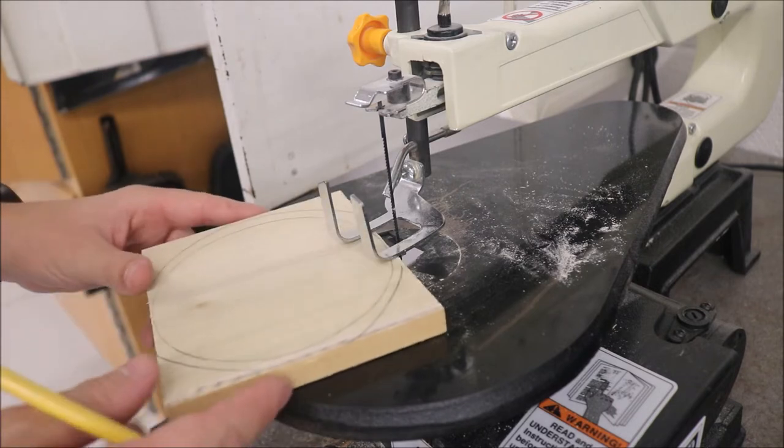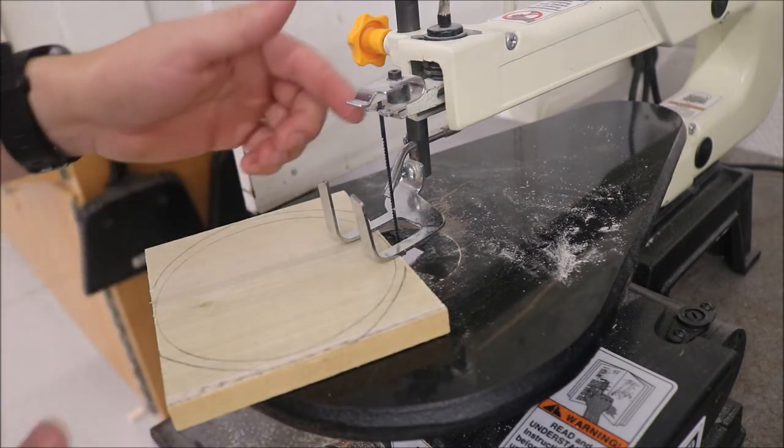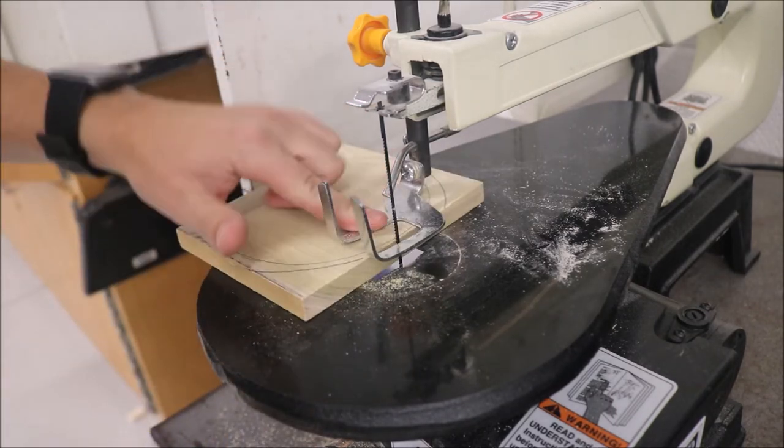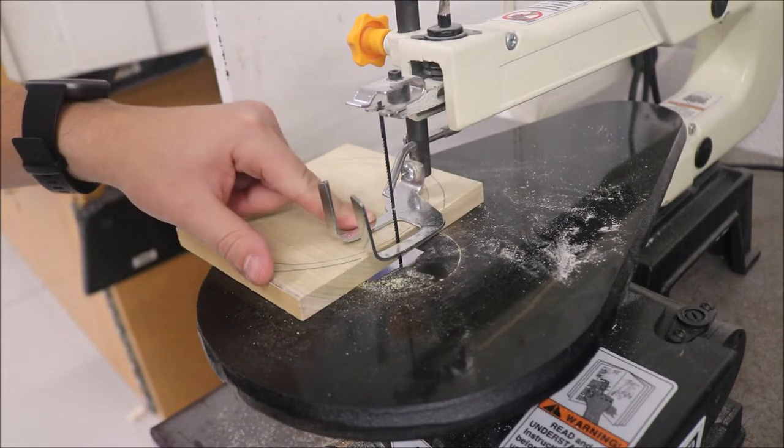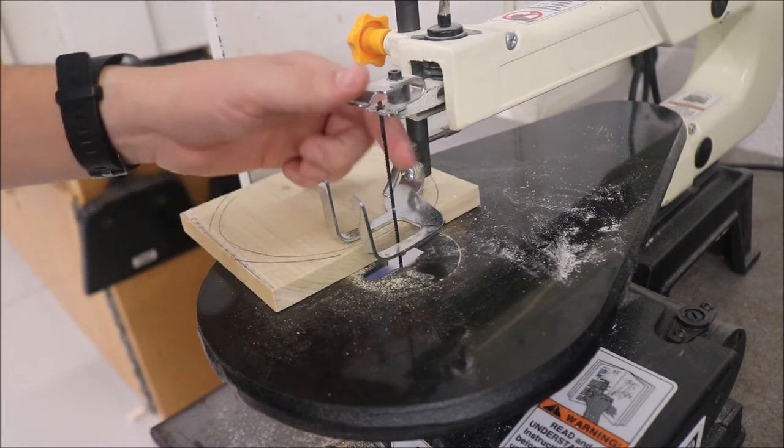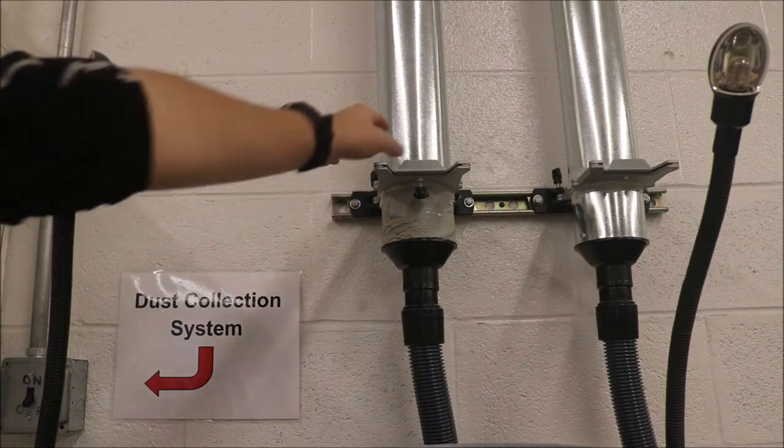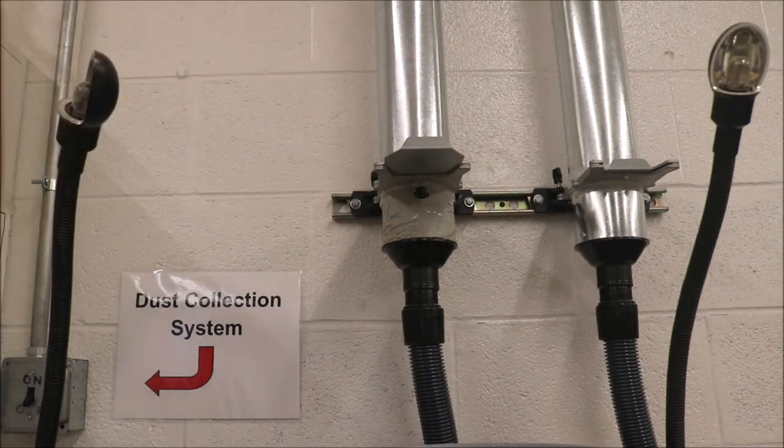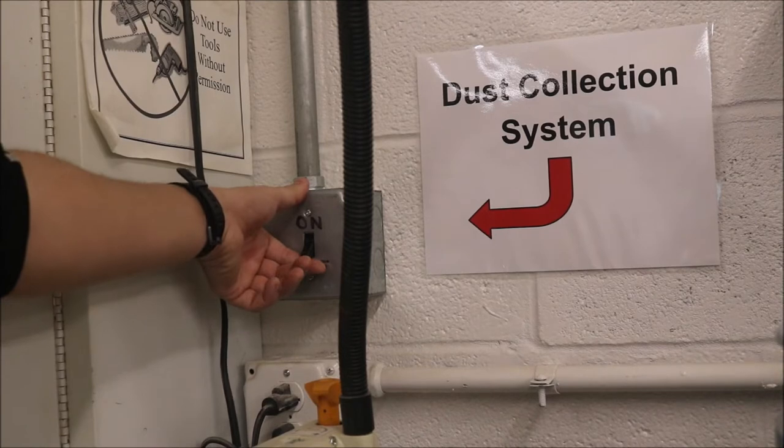Just make sure that before you use the machine, one, you set the hold down so it's touching the top of the piece of wood. Check the blade by plucking it. Make sure that you pull the blast gate open for dust collection, and finally turn the dust collection system on.